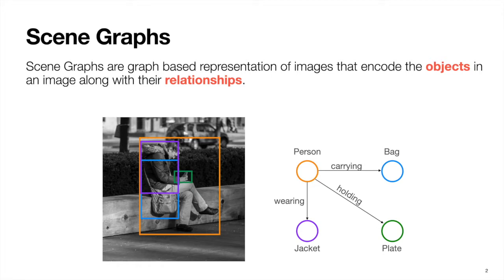As an example, for this particular image, the nodes in the scene graph would contain bounding box annotations for person, jacket, bag, and plate, with the edges encoding relations such as person carrying bag and person holding plate.